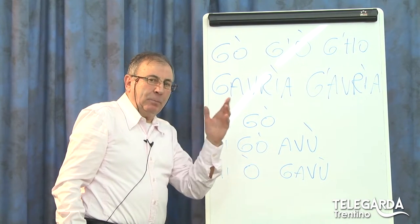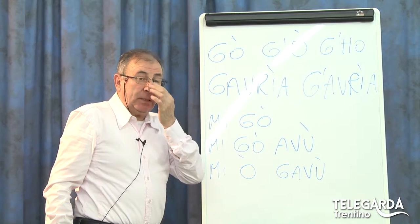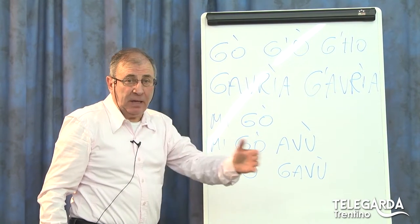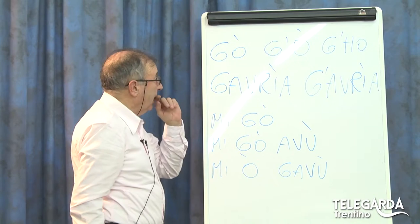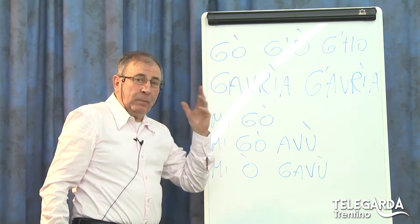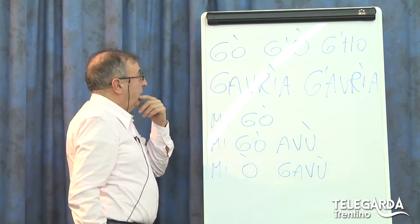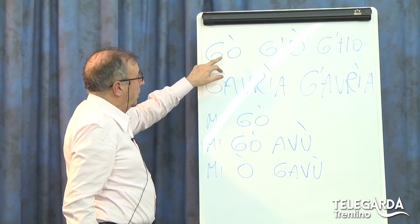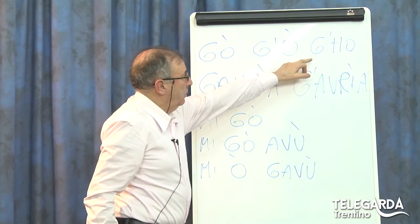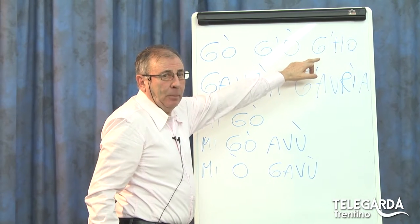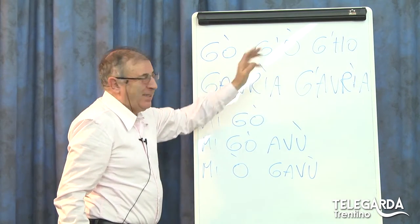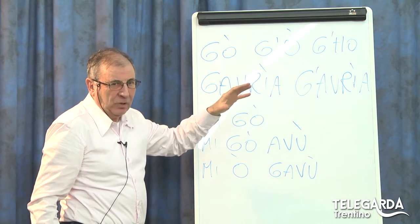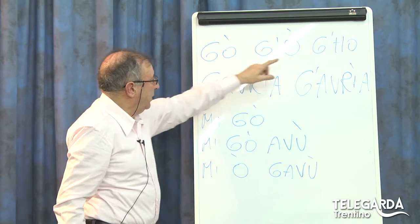Io ho avuto modo, qualche puntata fa, di presentarvi la coniugazione del verbo essere e del verbo avere, cioè i verbi cosiddetti ausiliari. E in particolar modo sul verbo avere, vi ricordate che io avevo scritto questa forma 'go', però anche si poteva dire con l'apostrofe. Questa forma centrale è un po' scarsissimamente usata, le due forme sono questa o questa.